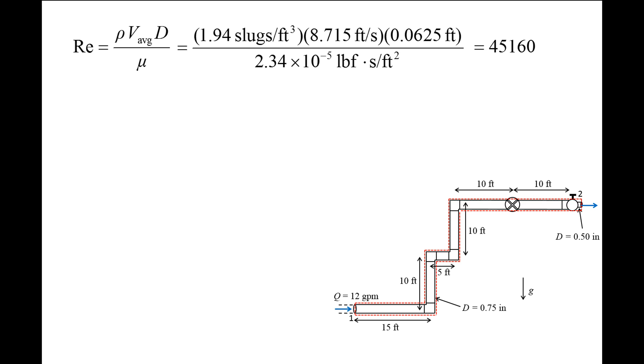Since the Reynolds number is greater than 4,000, this indicates the flow is turbulent and we must also calculate the relative roughness before finding the friction factor. Typical values of absolute roughness epsilon for new drawn tubing is 5 × 10^-6 feet. Dividing the roughness by the pipe diameter and converting inches to feet in the denominator, we obtain 8 × 10^-5 for the relative roughness.